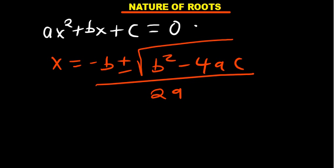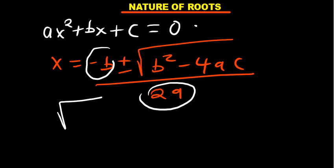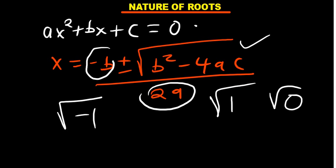The terms like negative b and 2a just lead to fixed numbers, but what is under the square root — b squared minus 4ac — can be negative, positive, or zero. This affects the nature of the roots, because of the plus or minus in the formula.